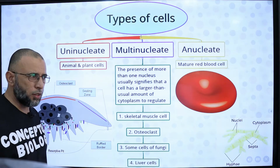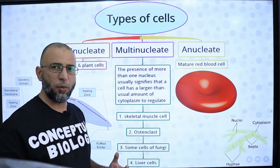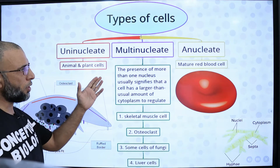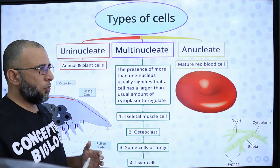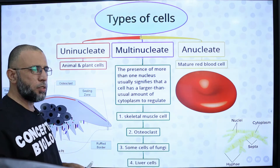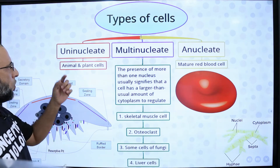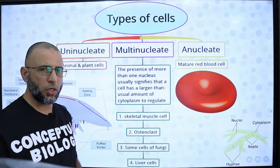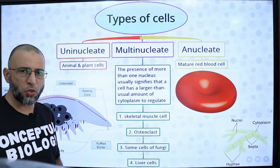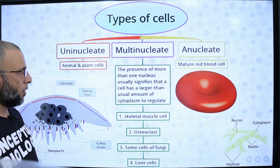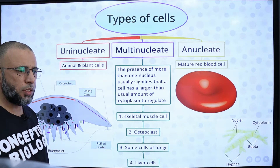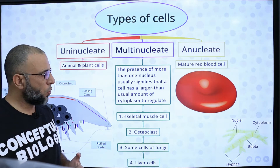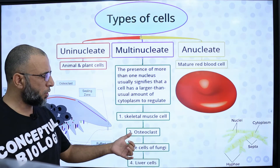Cells are divided into three types based on the number of nuclei: uninucleate, multinucleate, and anucleate. The majority of animal and plant cells have one nucleus, so they are called uninucleate. Multinucleate cells contain more than one nucleus and have a large quantity of cytoplasm. Examples of multinucleate cells are skeletal muscle cells, liver cells, and osteoclasts, which are bone-dissolving cells.